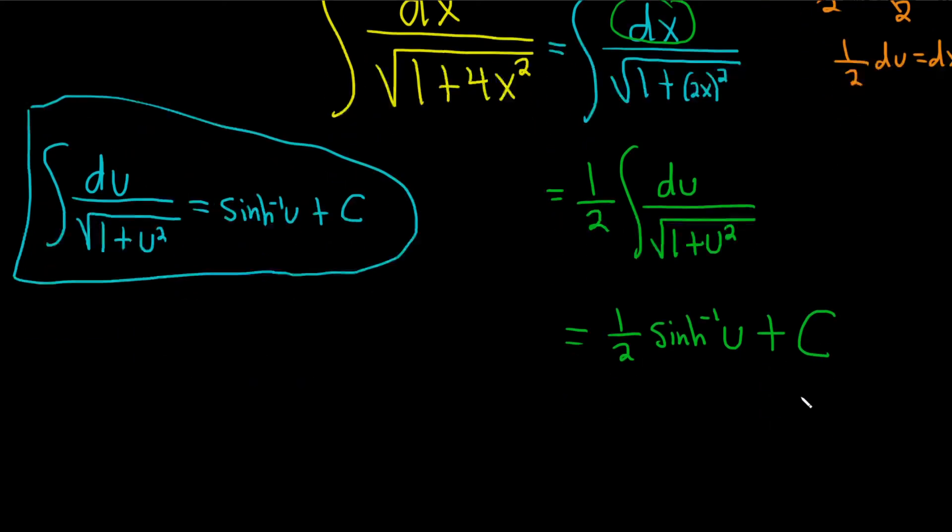u was 2x. So let's go ahead and just replace the u with the 2x, and we are good to go. This is 1 half sinh inverse of 2x. I don't know what happened there. I put the symbol in the wrong place. Plus C.